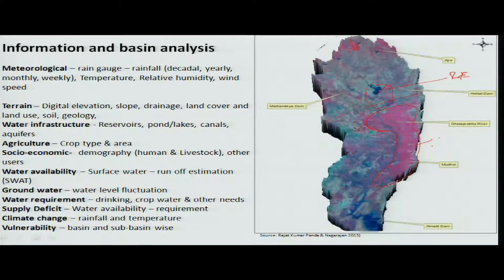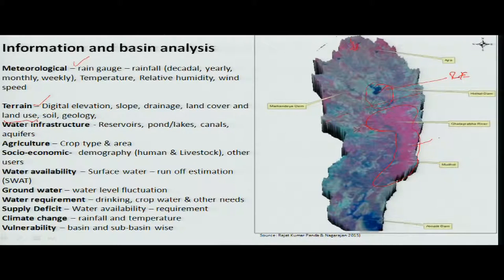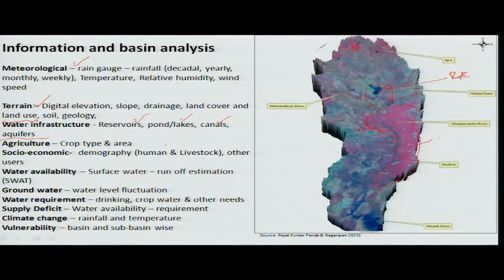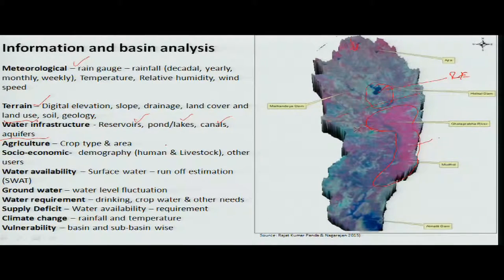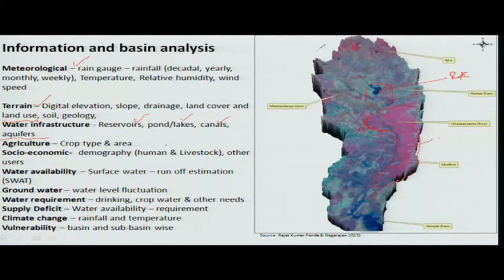This analysis can be done by combining meteorological information and terrain information. In addition to that, the water infrastructure available in these areas includes reservoirs, ponds and lakes, and canals. Depending on the age of the construction — if it is an older reservoir, maybe 40 to 60 years old — the probability of sedimentation is very high, and the storage capacity of the reservoir is reduced. This means they may not be able to store enough water as anticipated and as planned for agriculture downstream.